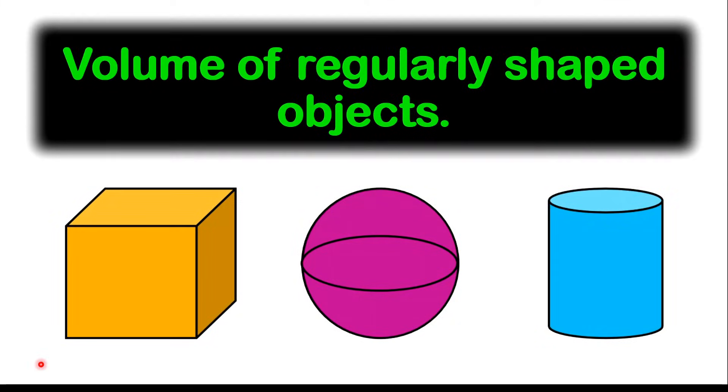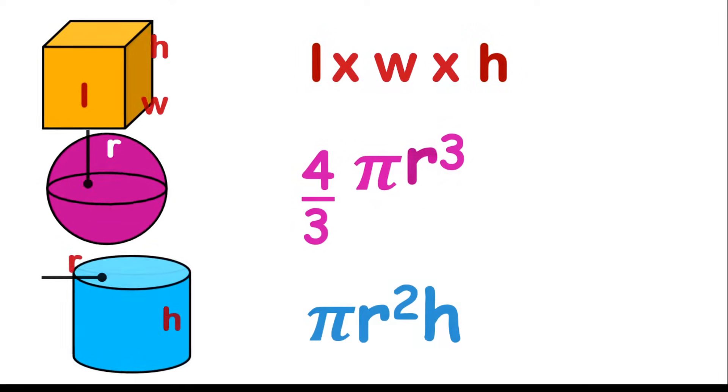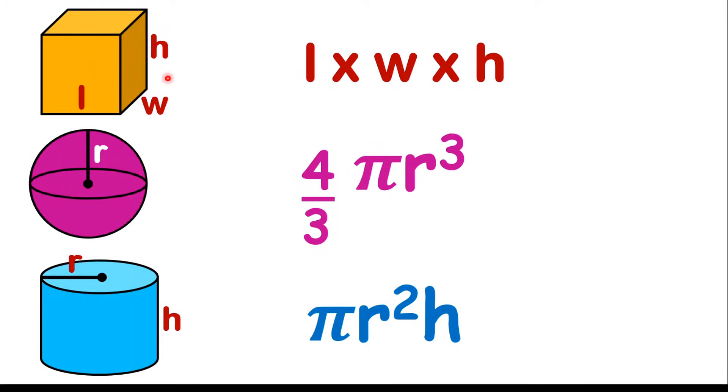To measure the volume of regularly shaped objects, there are some known shapes we can look at. For a square or rectangle, we measure volume by length times width times height. To measure the volume of a sphere, it is 4 over 3 times pi r cubed, where r is the radius. To measure the volume of a cylindrical object, it will be pi r squared times h, where h is the height of that cylinder and r is the radius.